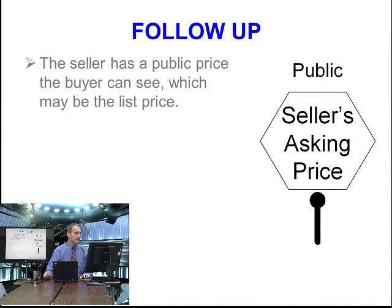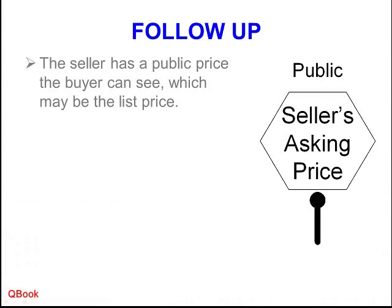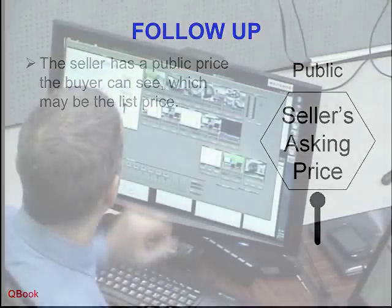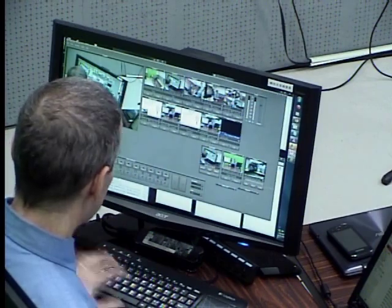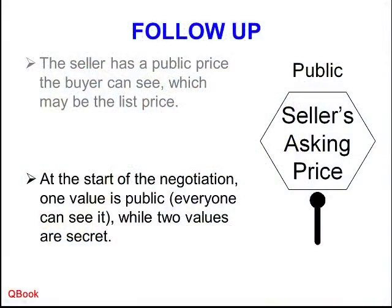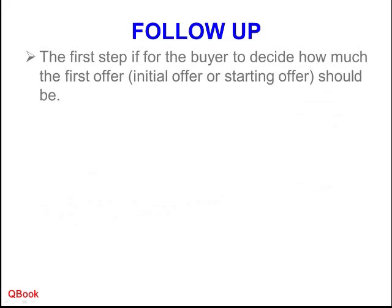We call this the seller's asking price. At the start of the negotiation, one value is public — everyone can see it — while two values are secret. The asking price, the selling price, the retail price, the list price — this is in fact public. Two other values are secret. The first step is for the buyer to decide how much to offer, or the initial starting offer.